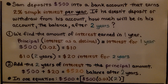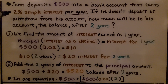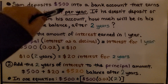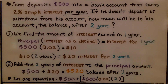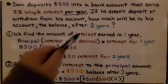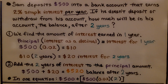Sam deposits $500 into a bank account that earns 2% simple interest per year. If he doesn't deposit or withdraw from his account, how much will be in his account — the balance — after two years?